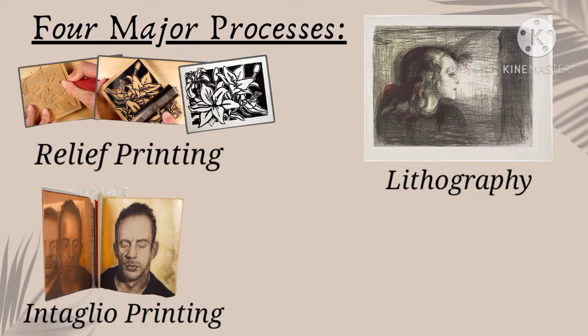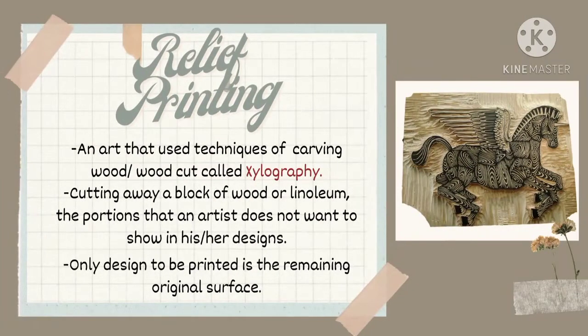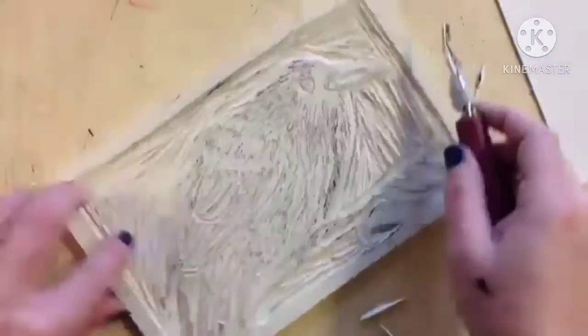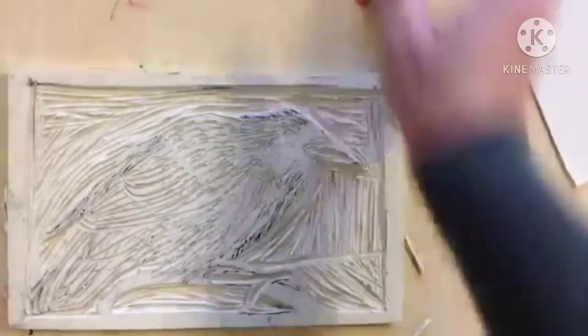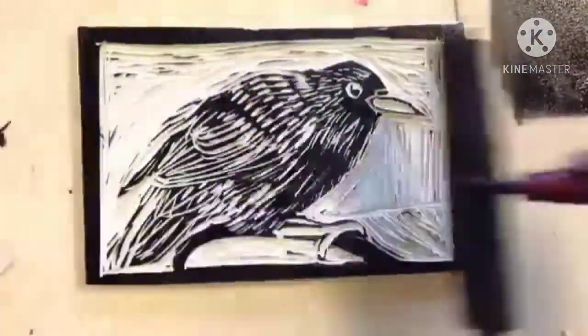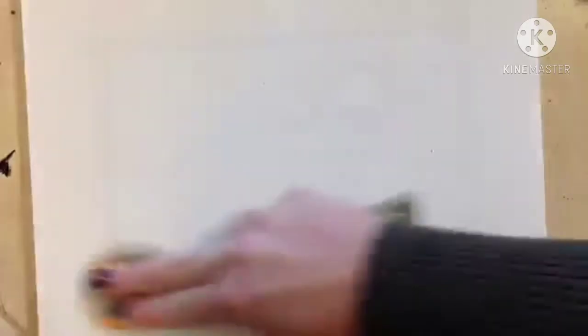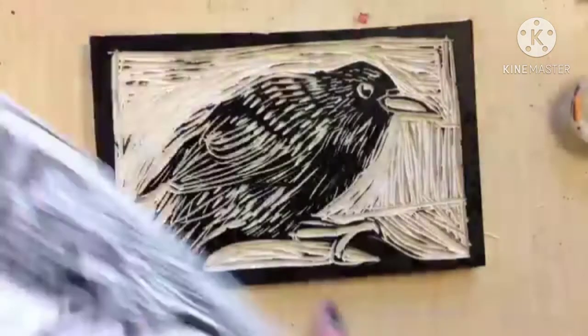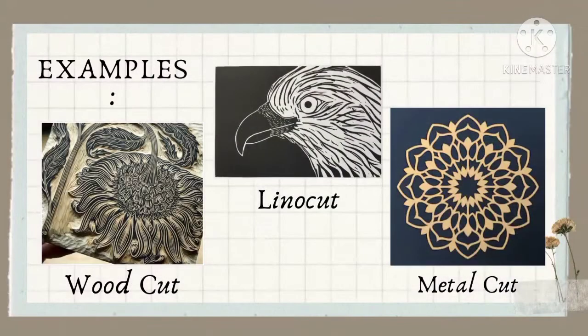The first is relief printing. This is a process of printmaking that uses the techniques of carving wood — known as woodcut or xylography — where portions are cut away from a block of wood or linoleum. The versions the artist does not want shown are removed, so that only the remaining original surface is printed. Examples include woodcut, linocut, and metalcut.